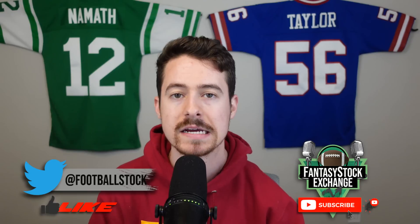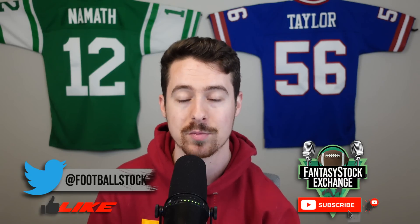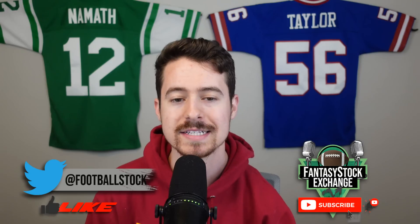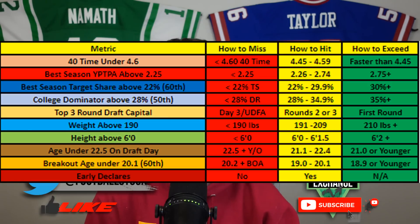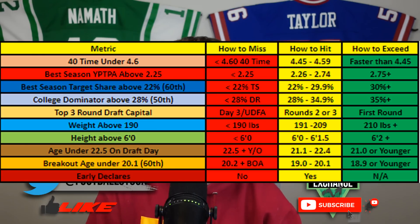Here are all the wide receivers from 2015 to 2022 who scored at least 15-plus PPR points per game — 56 different wide receivers across those eight seasons. Last year's video I talked about 10 benchmarks. I tried adding more, but these 10 remained the most predictive. You can see the benchmarks on screen: how you can hit, miss, or exceed each one. For example, 40 time under 4.60 — if you ran slower, you missed. If you ran between 4.45 and 4.59, you hit it. If you ran faster than 4.45, you exceeded it. Yards per team pass attempt above 2.25 works the same way: miss is below 2.25, hit is 2.26 to 2.74, exceed is 2.75-plus.